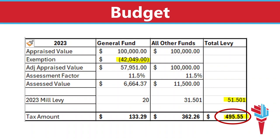The other three funds — Supplemental General, Capital Outlay, and Bond and Interest — do not get the exemption. So I combined them in the third column. We start with the $100,000 appraised value, multiply it by 11.5%, giving us a new assessed value. We then multiply that by the 31 mills, or .031501, giving us $362. In the last column, you can see the total mills of 51.501 and the total taxes of $495 for last year. This example represents what the homeowner would have paid last year.